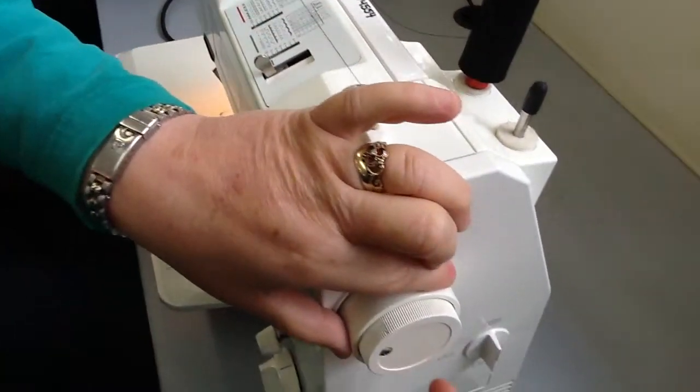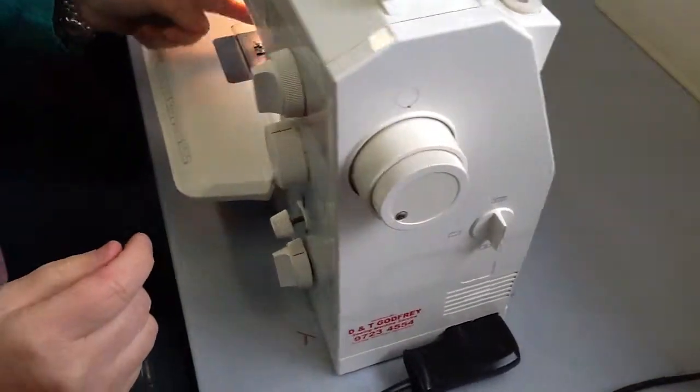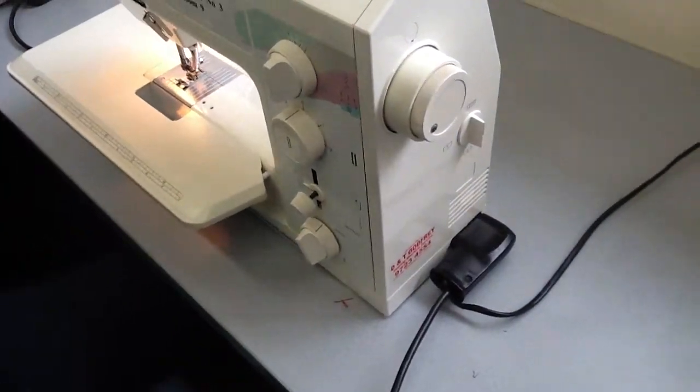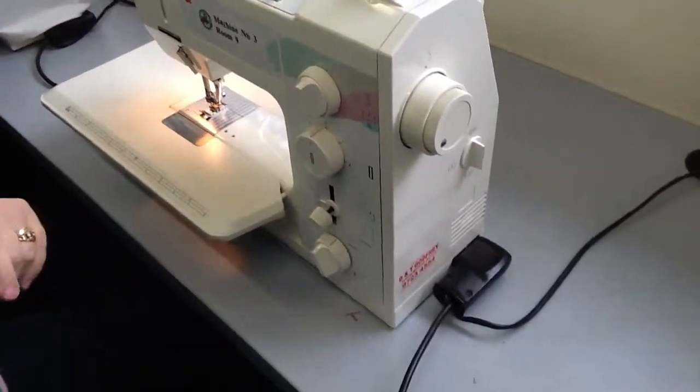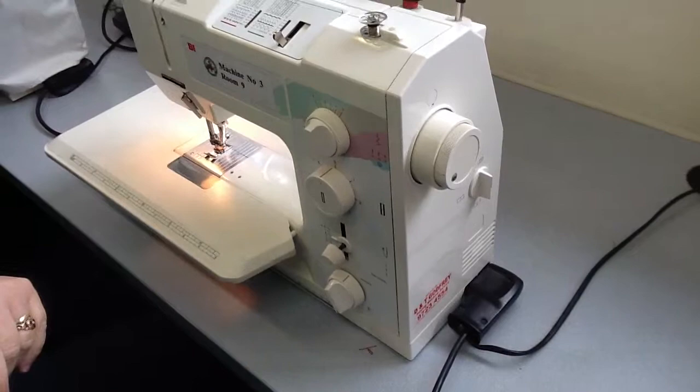I then disengage the hand wheel, disengage the center, so that the needle no longer goes up and down, then put my foot lightly onto the foot pedal, and my bobbin will start to reel on.